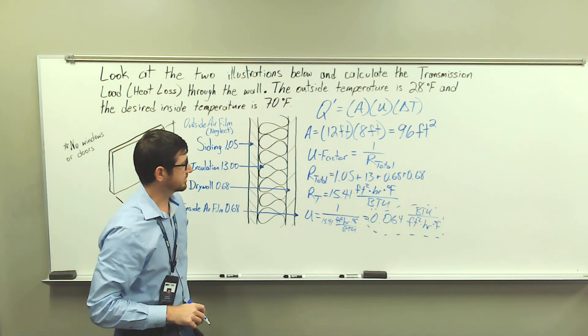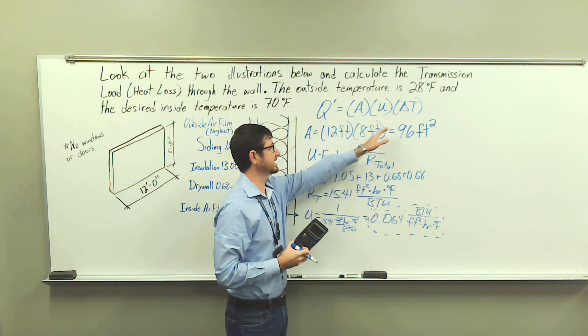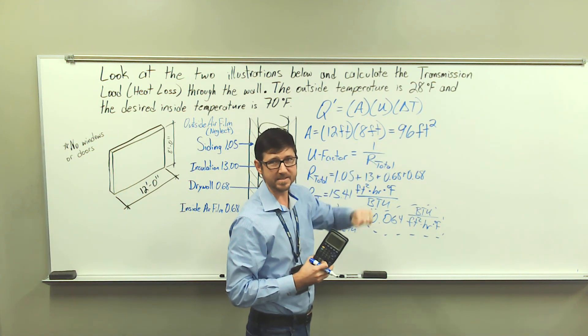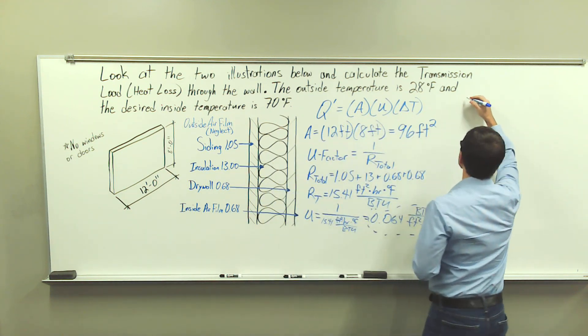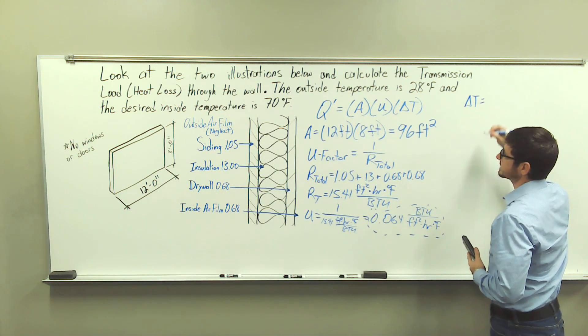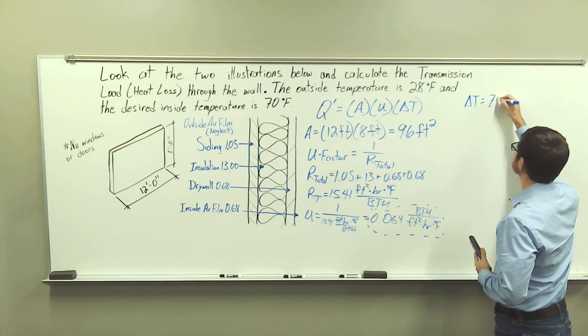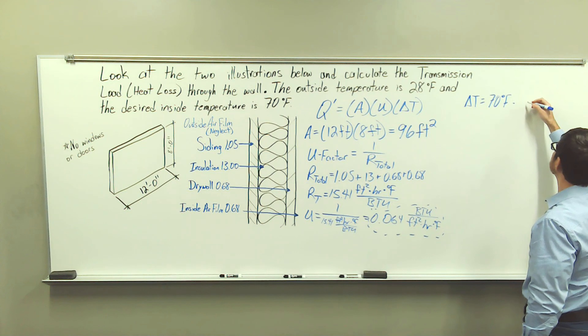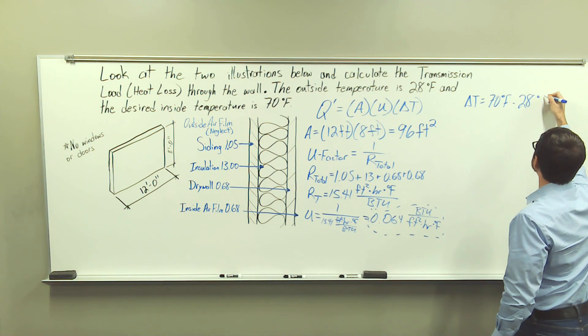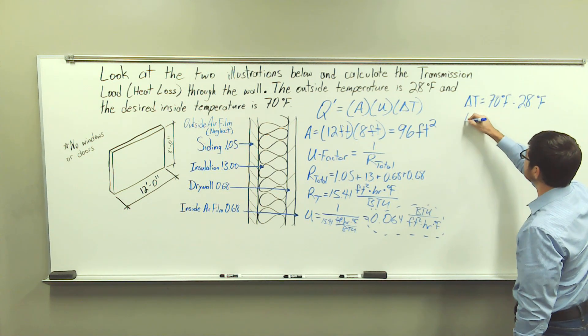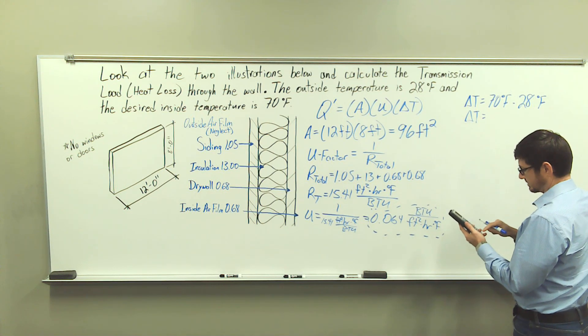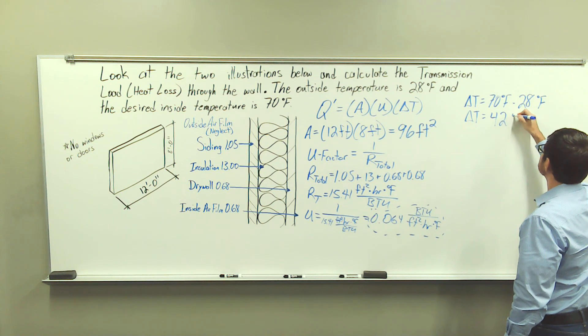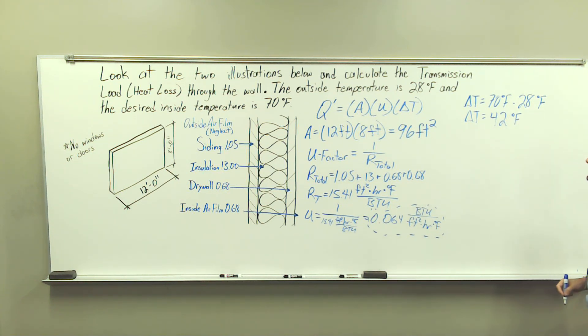So we're going to need that. And next, we need our temperature difference between the inside and outside temperature. So delta T is going to be 70 degrees Fahrenheit minus 28 degrees Fahrenheit. So I have 42 degrees Fahrenheit.